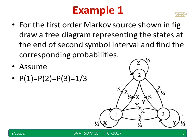Now, assuming the state probabilities of states 1, 2, and 3 are all equal at 1 by 3. The transition probabilities are given — for example, the probability of moving from state 1 to state 2 is 1 by 4, moving from state 2 to state 1 is 1 by 4, and from state 1 to state 1 it is 1 by 2.